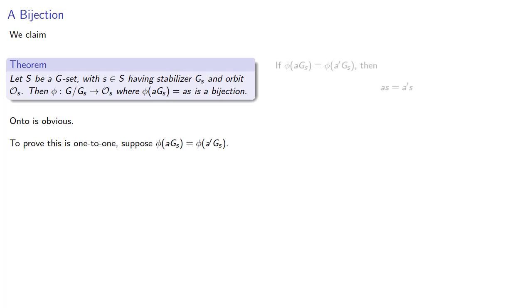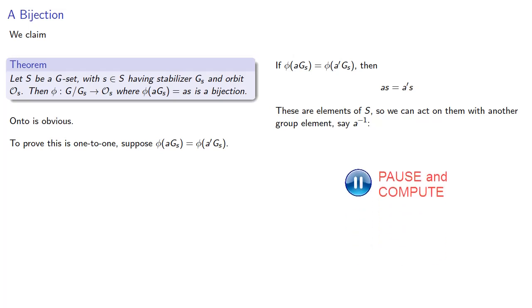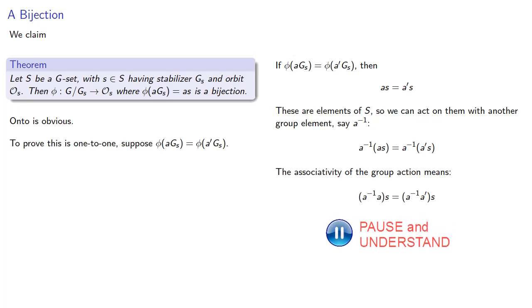Now, by our function definition, this means a applied to s is the same as a' applied to s. And note that these are elements of S. So we can act on them with another group element, say a inverse. And the associativity of the group action means, and now we have operations in our group so we can simplify. And what this means is that since applying a inverse a' to s just gives us s, then a inverse a' is an element of the stabilizer of s.